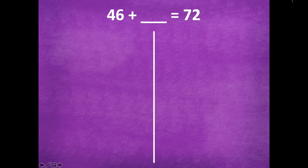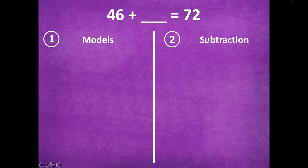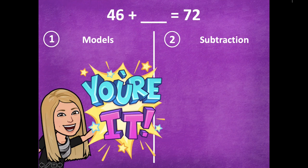All right, so let's take a look at another one here friends. So we have the two ways. 46 plus blank, which is our unknown, equals 72. You can solve using models or subtraction. Go ahead and pause the video. You can solve both ways if you'd like, or at least make sure you solve one way, and then click play when you're ready to go over it together.